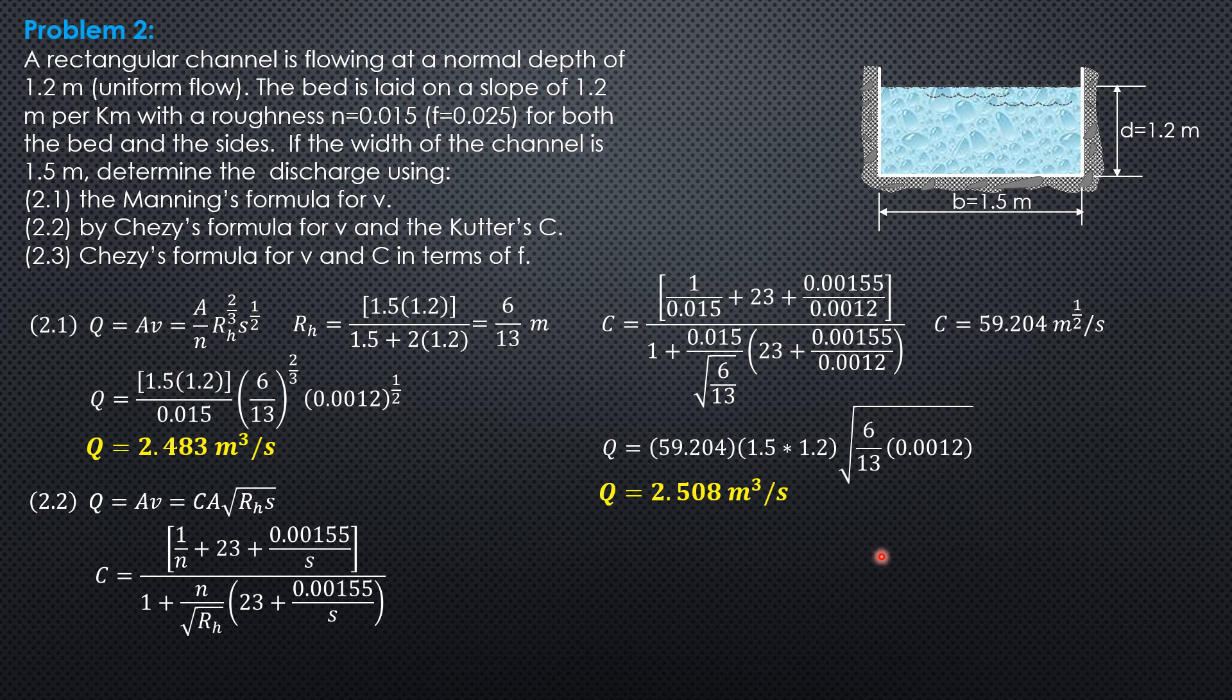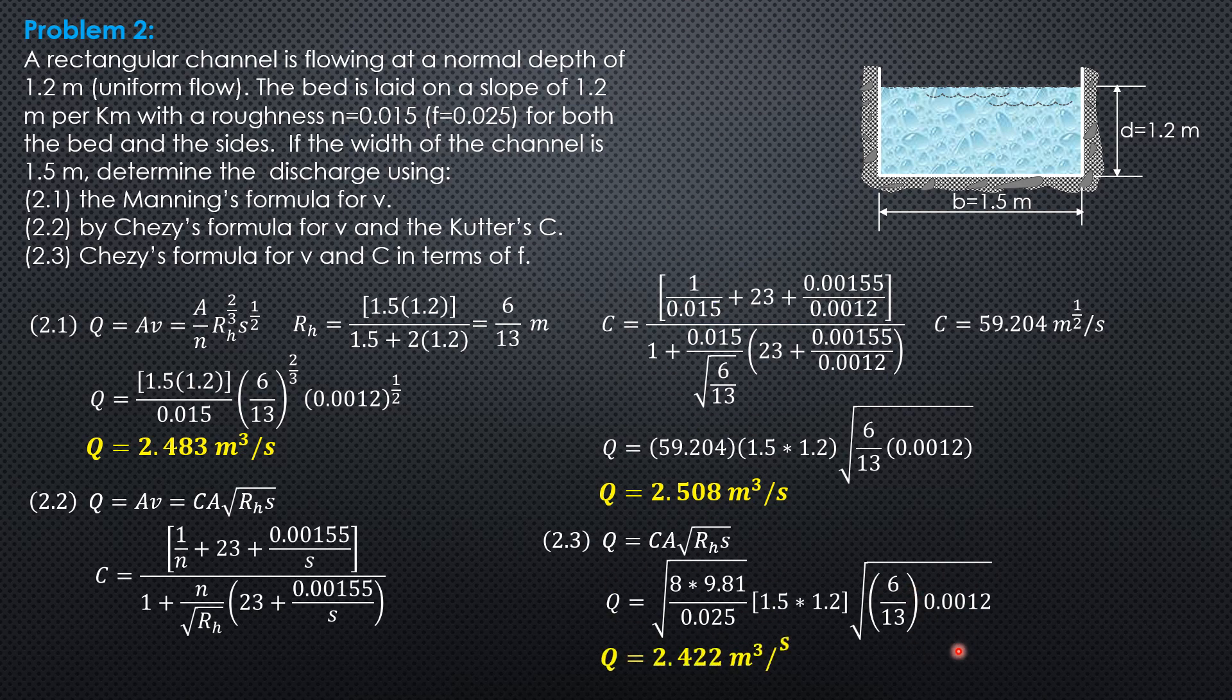Then 2.3 by C is the formula for V, same formula, CARS, but C is square root of 8G over F, so C CARS, C A is square root of hydraulic radius times slope, so C is 8G over F, 0.025 times area 1.5 times 1.2, then square root of hydraulic radius times slope. So the discharge is 2.422 cubic meter per second.